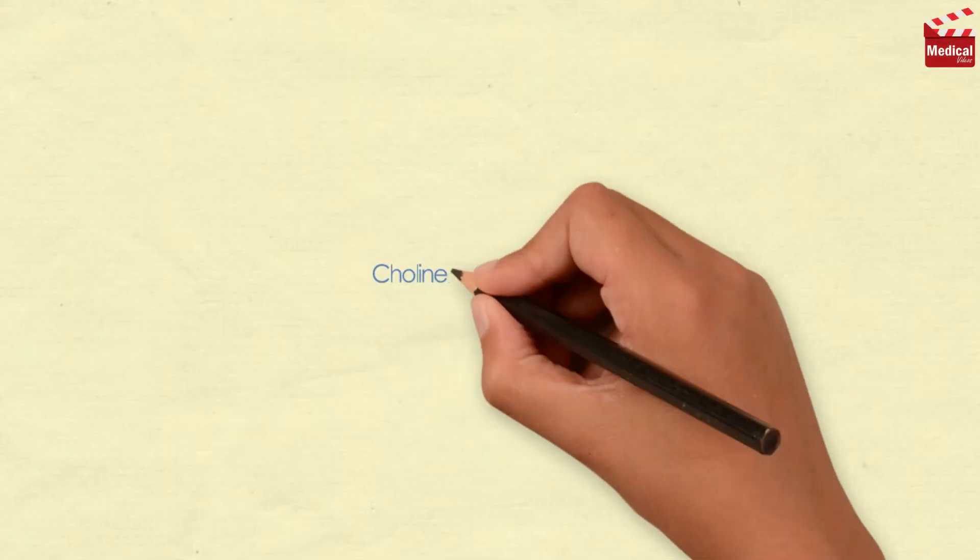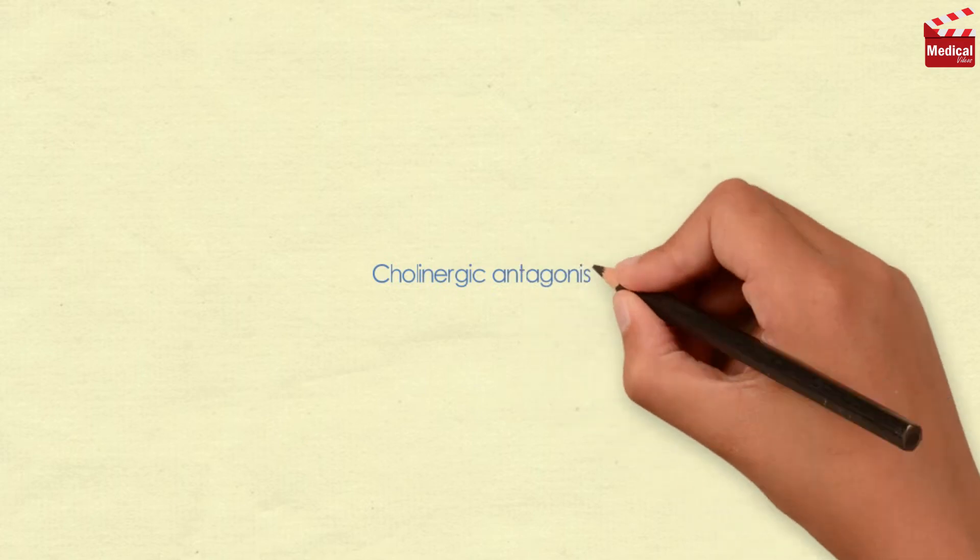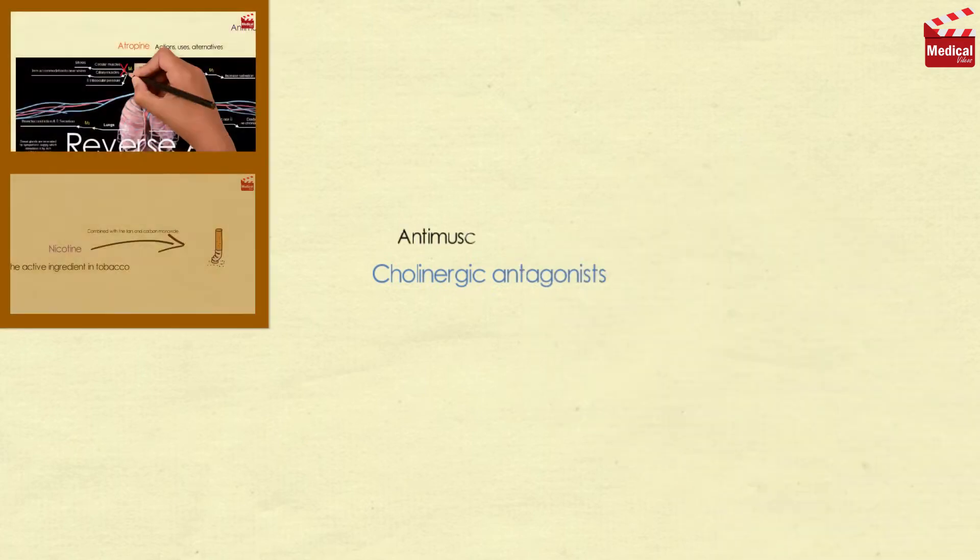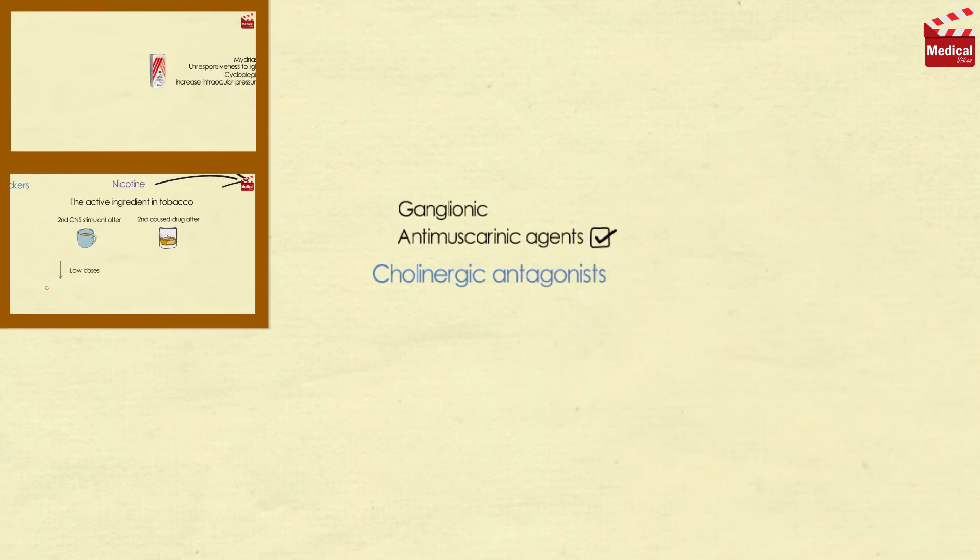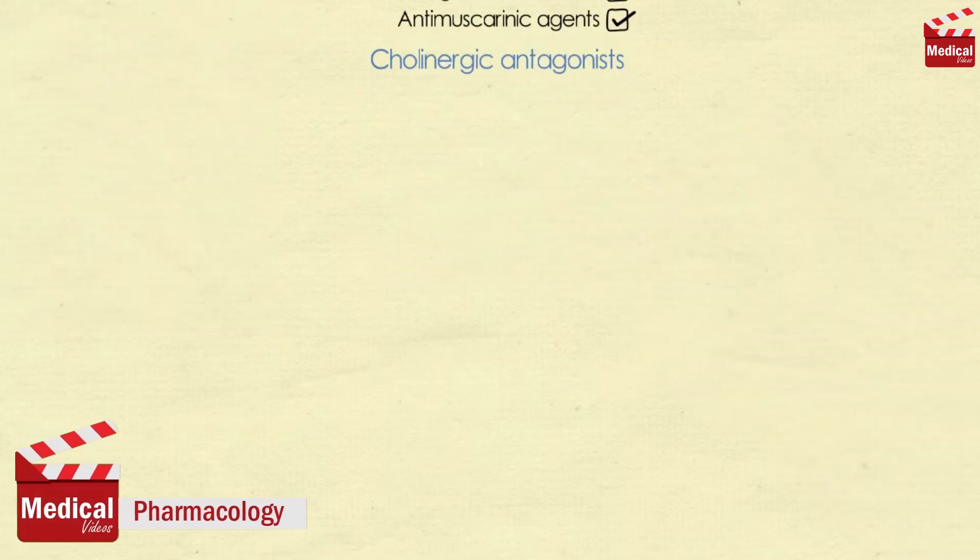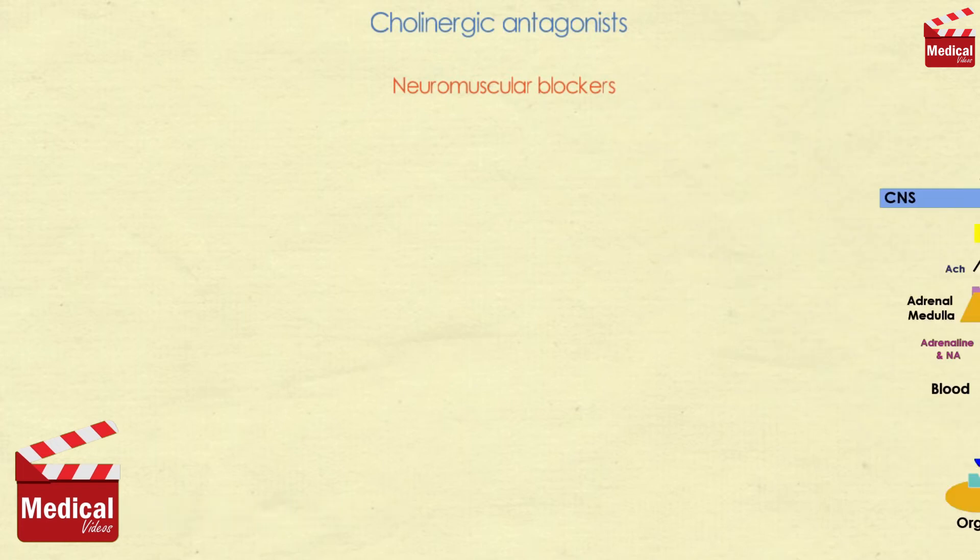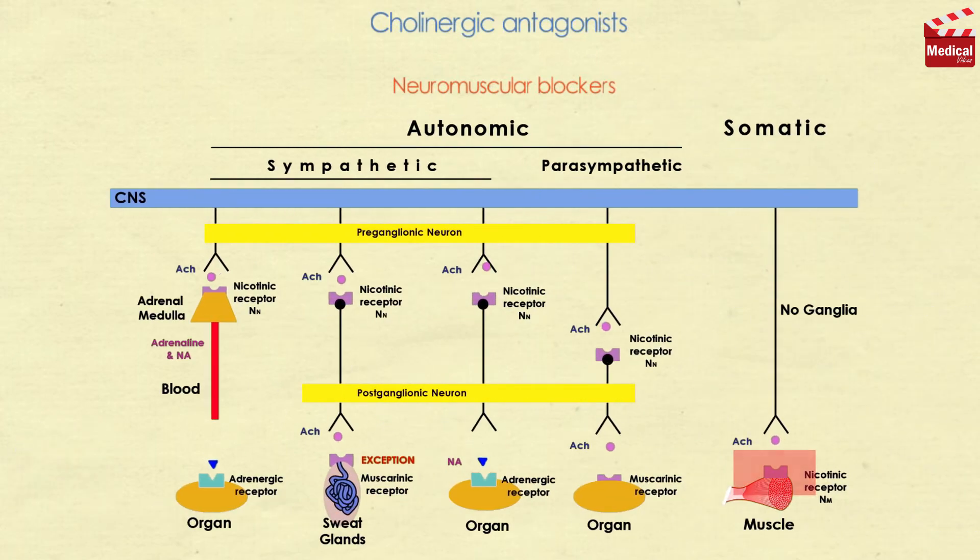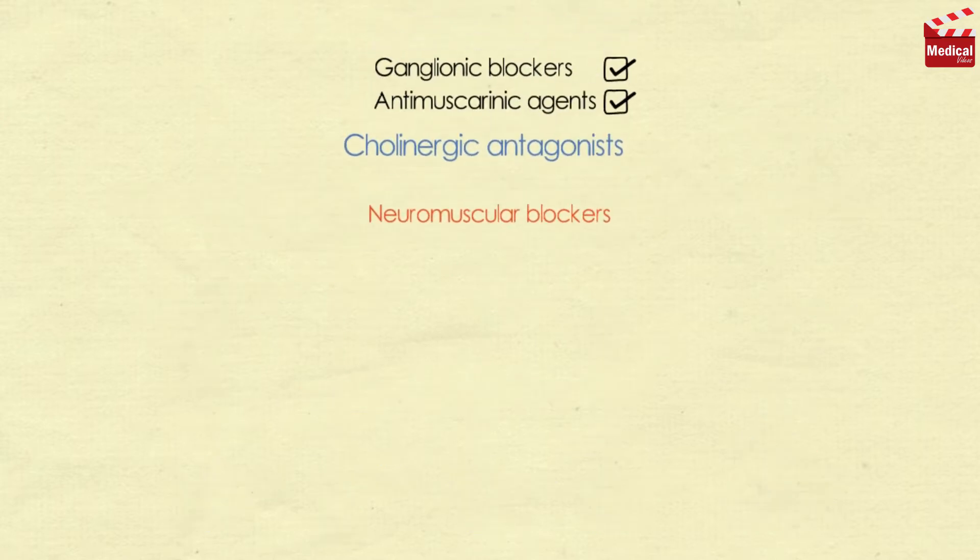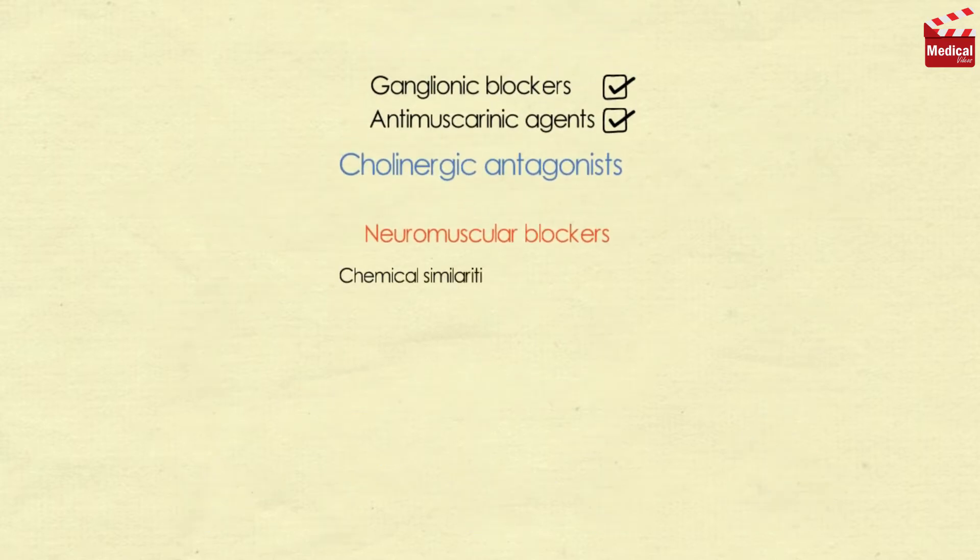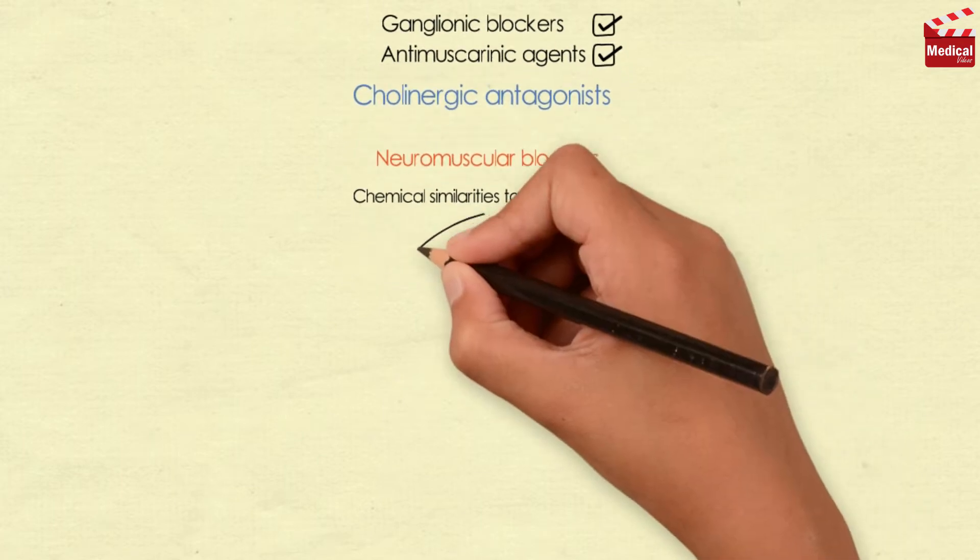In the previous two lectures we discussed two groups of cholinergic antagonists: the antimuscarinic agents and the ganglionic blockers. Today we'll discuss the last group, the neuromuscular blockers. These drugs block cholinergic transmission between motor nerve endings and the nicotinic receptors on skeletal muscle. They have some chemical similarities to acetylcholine.